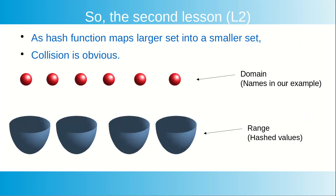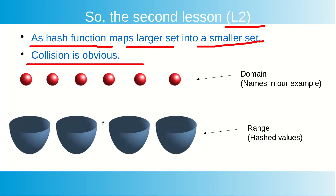A hash function maps a larger set into a smaller set, which means collision is obvious. Suppose there are 6 different balls and 4 different containers: if you want to accommodate all balls in those containers, definitely at least one or two containers will have more than one ball. This is called the pigeonhole principle — if you have more pigeons than pigeonholes, then some hole is going to take more than one pigeon. Your domain contains many many names but your range contains only 676 possibilities, so definitely more than one name will map to the same hash value.